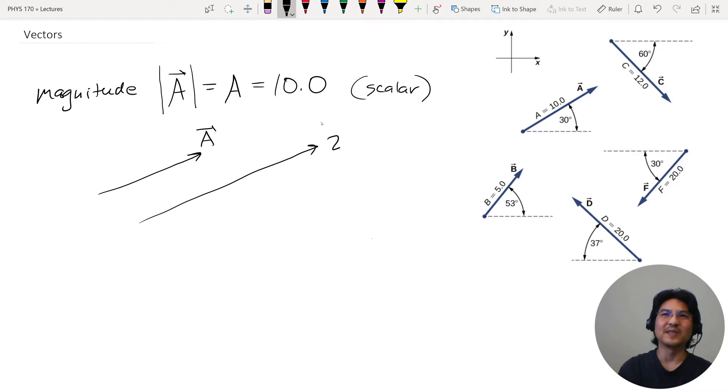So let's say this is 2 times vector A. You see it's just the magnitude is 20, the direction is the same direction. Or let's say vector B is here, and then I go like this, negative 3B. So the magnitude now is 15, but the direction is going the other way because of this minus sign.